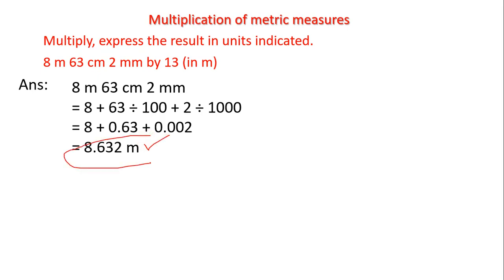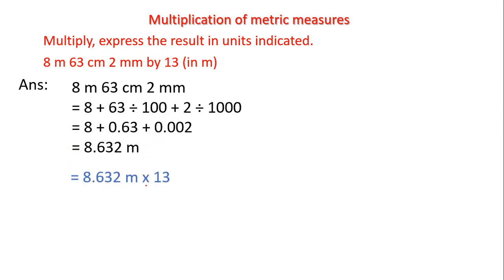Now we take this measurement and multiply by 13. So 8.632 meters multiplied by 13. Starting with 3: 3 times 2 is 6, 3 times 3 is 9, 3 times 6 is 18 — write 8 carry 1, 3 times 8 is 24 plus 1 carry is 25.